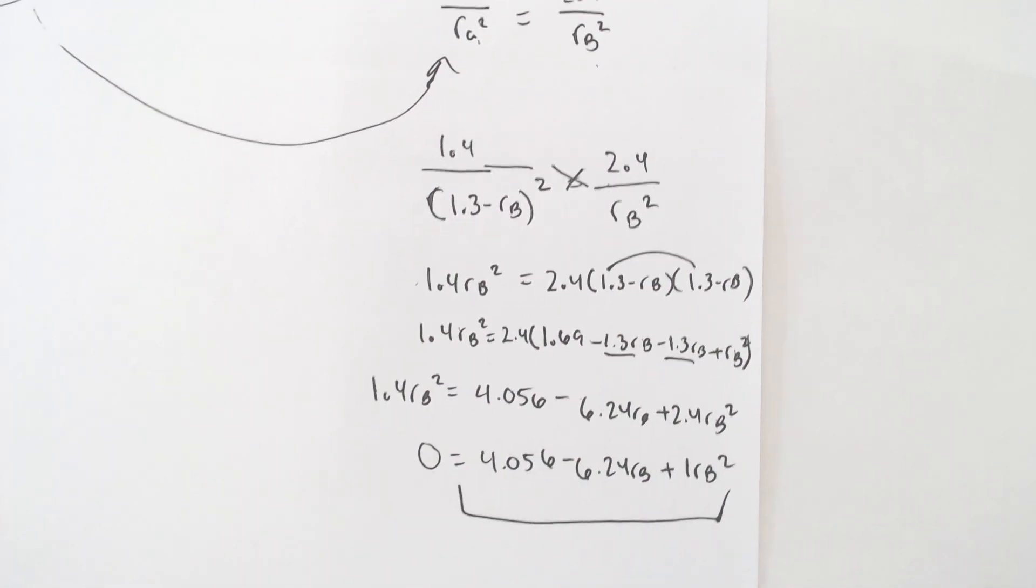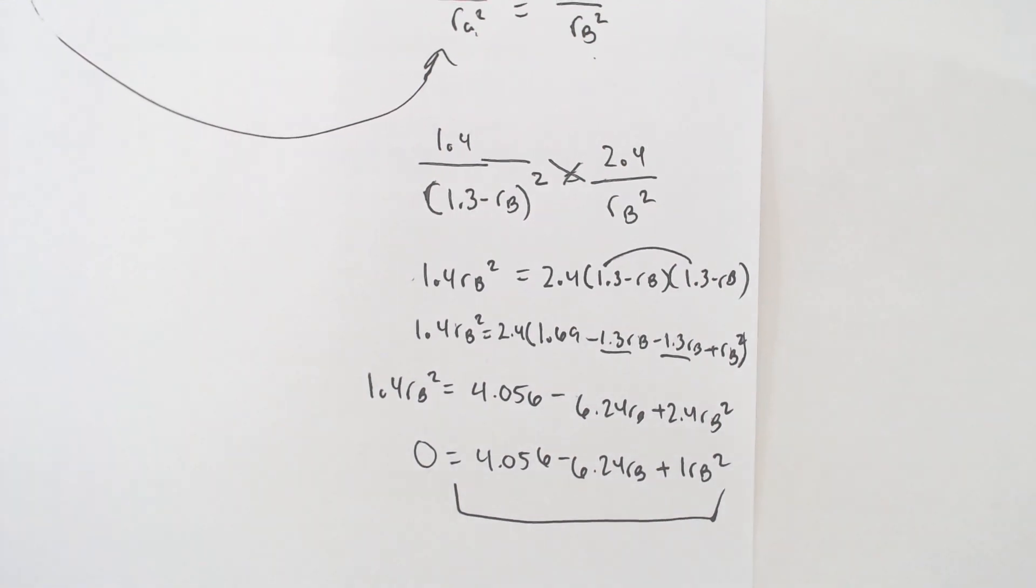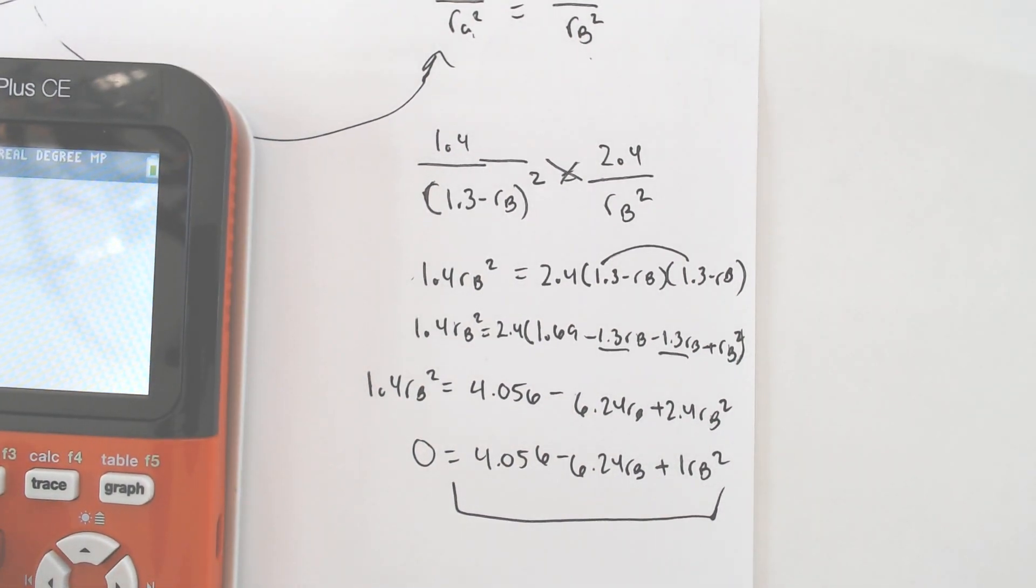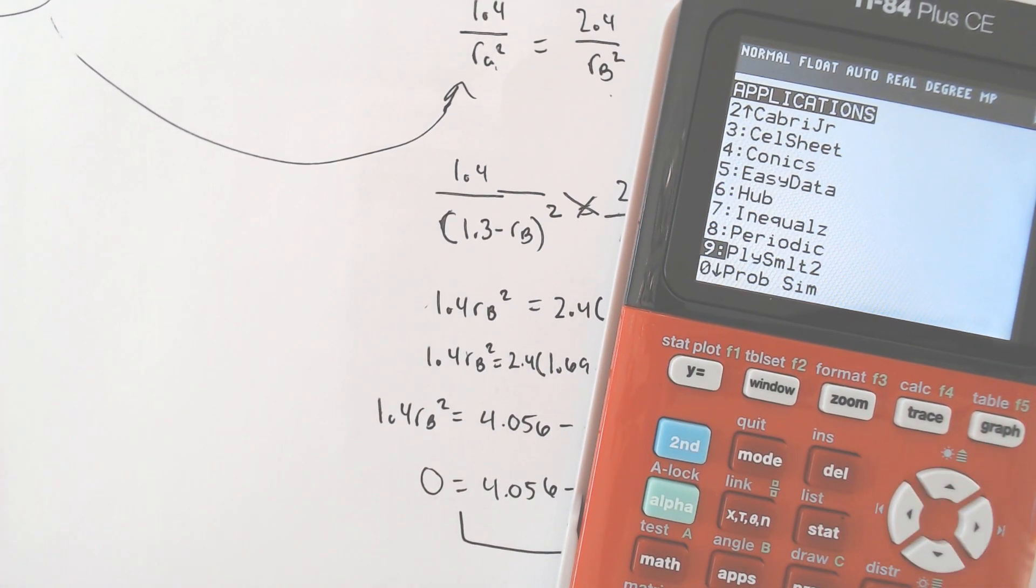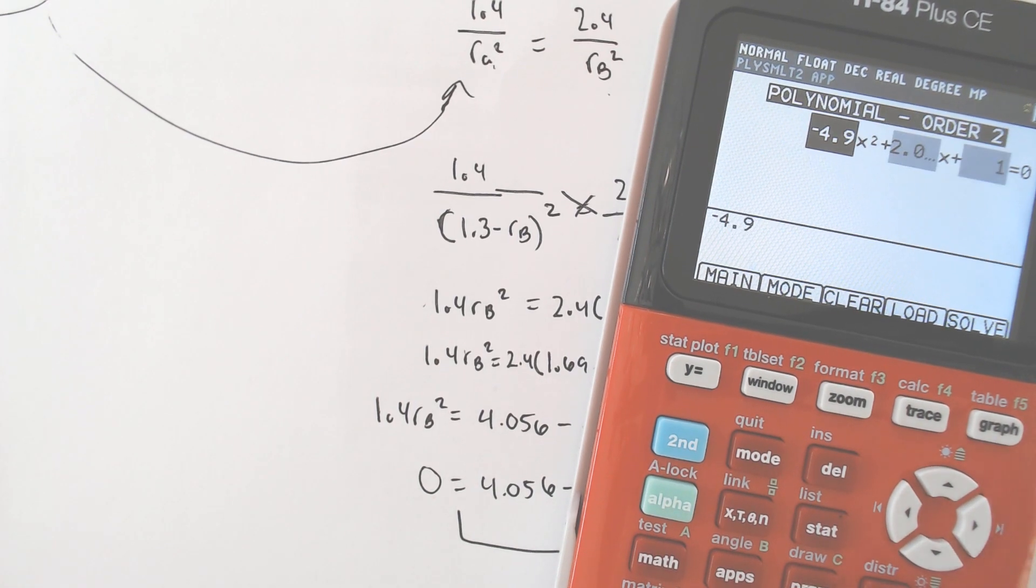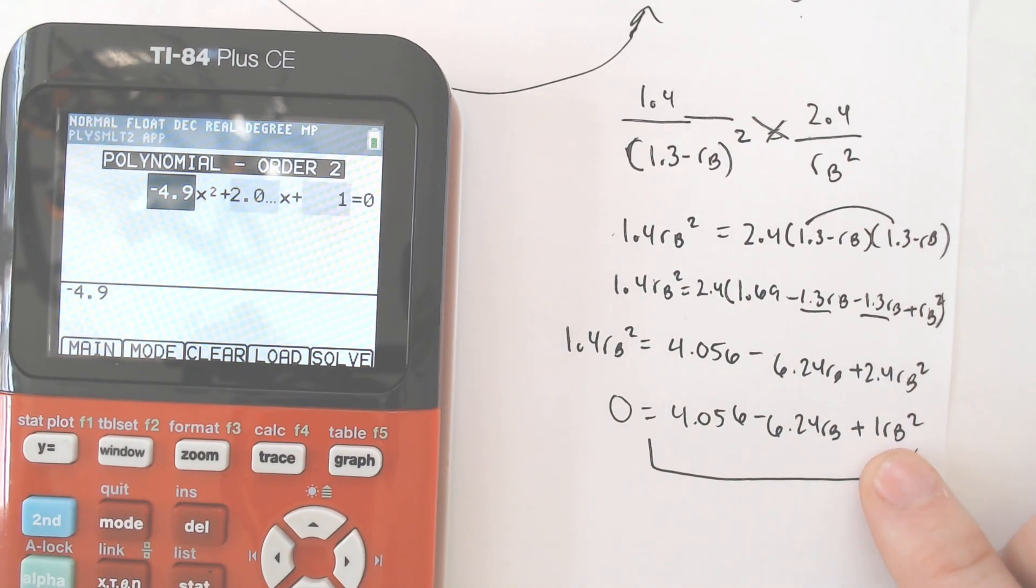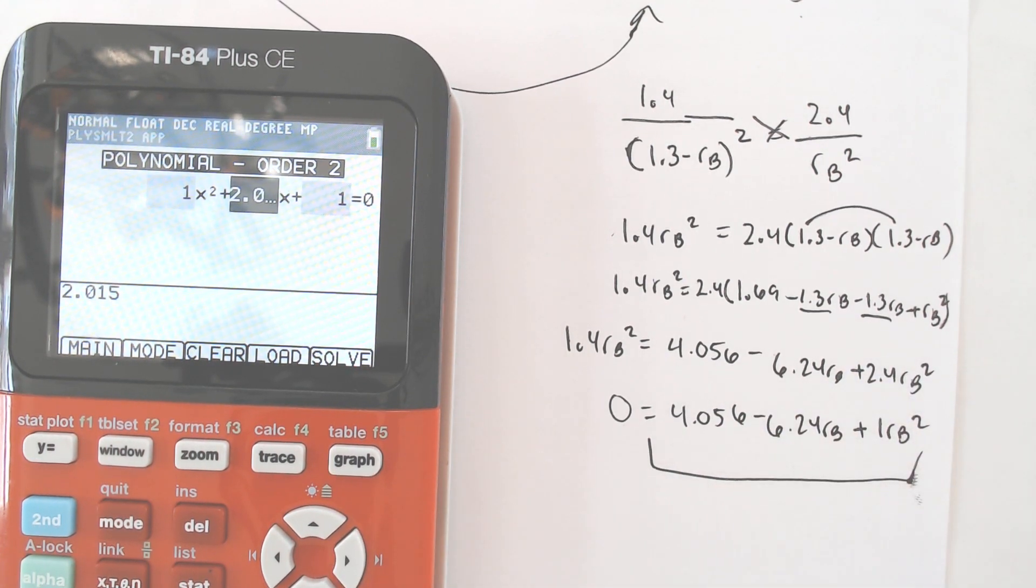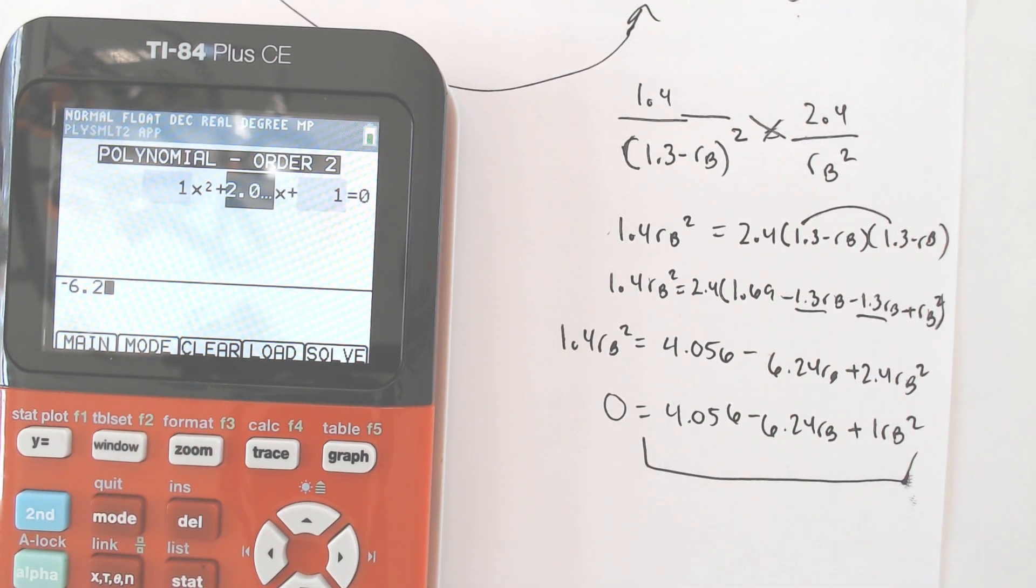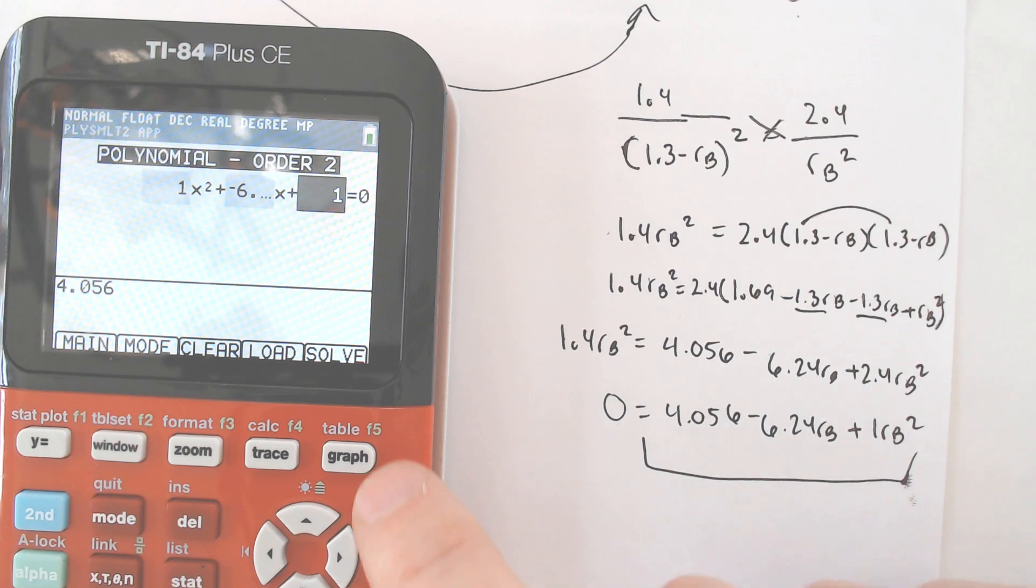From this point, you can use the quadratic formula. But I can also show you that in most graphing calculators now, you have a polynomial simulator where you just have to put in the values. The first term is the squared term. That was a 1. And then I hit negative 6.24. And then I would put in a positive 4.056. And then I just hit solve.